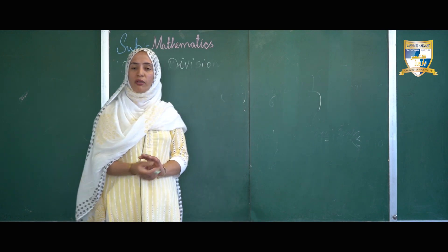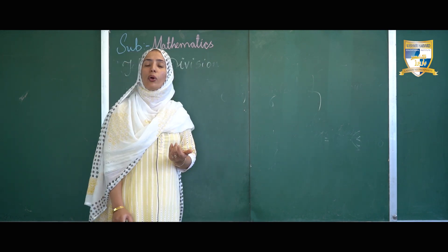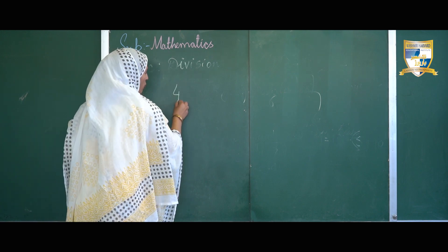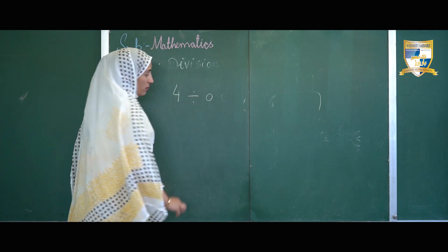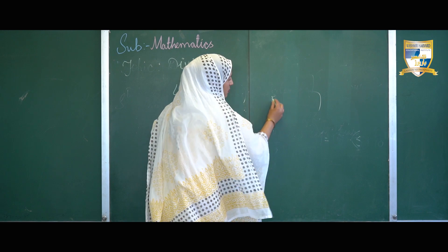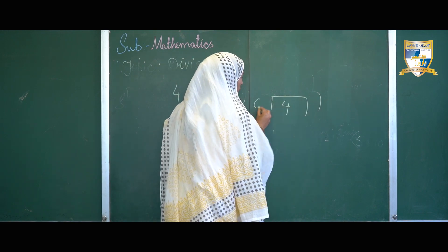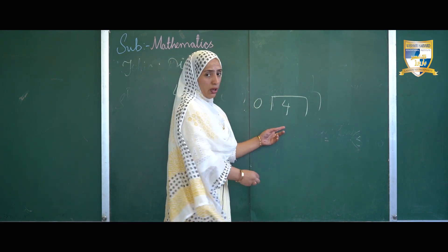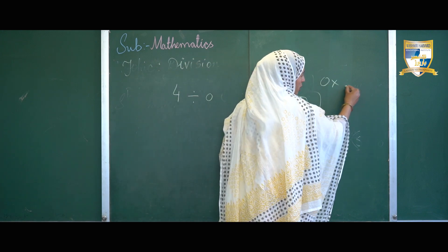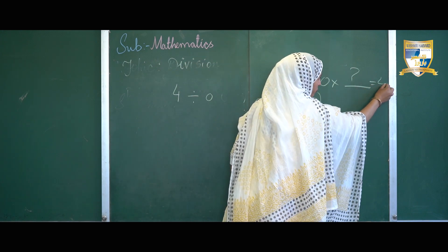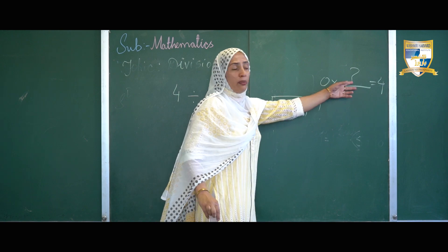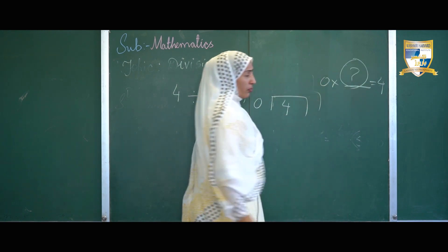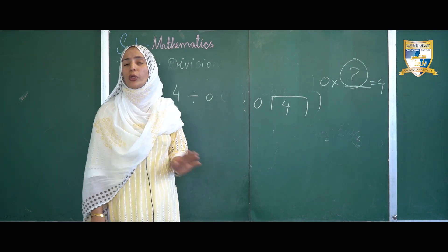The third division fact: division by 0 is not possible. If I take a number 4 and divide it by 0, what number multiplied by 0 gives us 4? There is no such number which when multiplied by 0 gives us 4. Since this value is undefined, division by 0 is not possible.